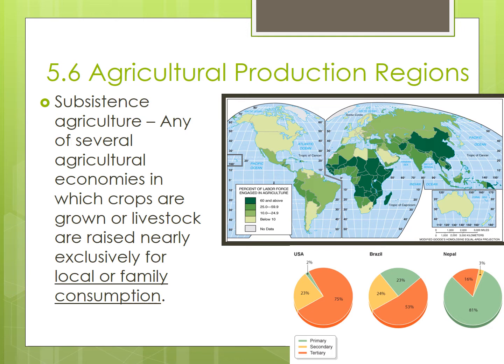Subsistence agriculture relies primarily on human labor, with many people engaged in farming, as there is very little capital to invest in machinery, livestock, or large plots of land. Throughout history, most farmers were subsistence farmers, so they could feed themselves and their community.